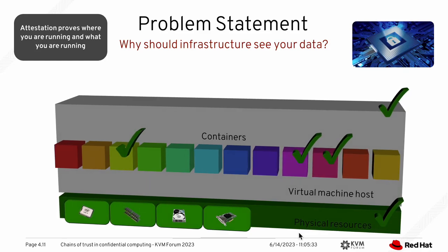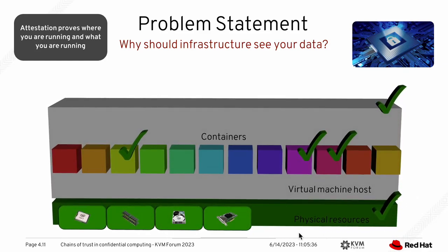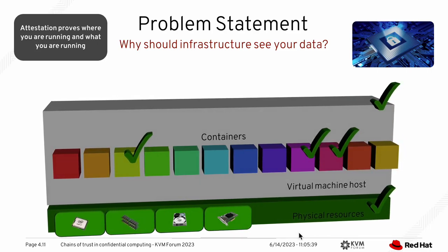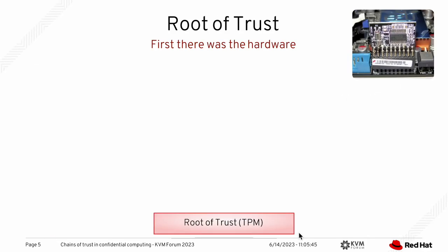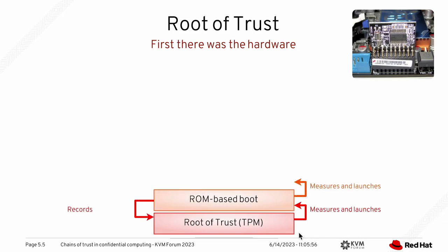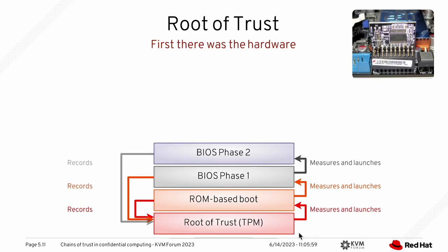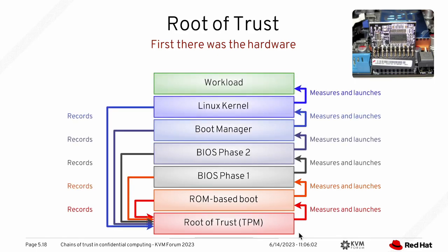Another important aspect — and the main focus of this talk — is attestation, which is essentially proving that what you are running is what you want to run, and that you are running where you want to run it in a setup you can trust. The origins of the root of trust: you've probably heard about the TPM. That was the hardware root of trust — it measures and launches the next stage, which records its own state, and keeps going until you reach the Linux kernel or the workload. At some point you have a faithful record stored in hardware of everything you did. This is essentially how you build the chain of trust, for instance for secure boot.